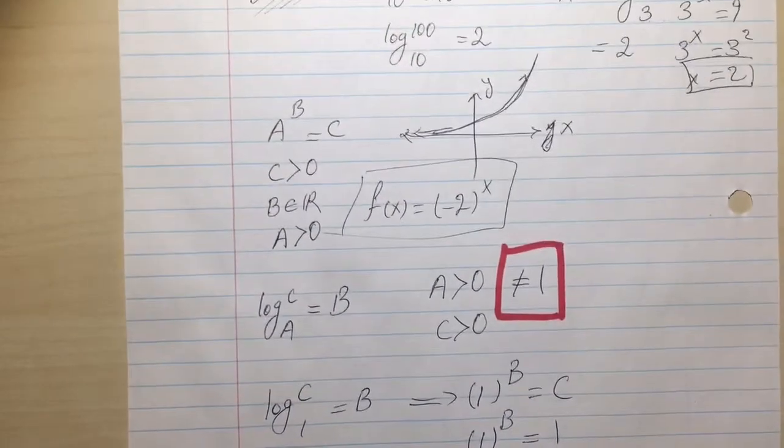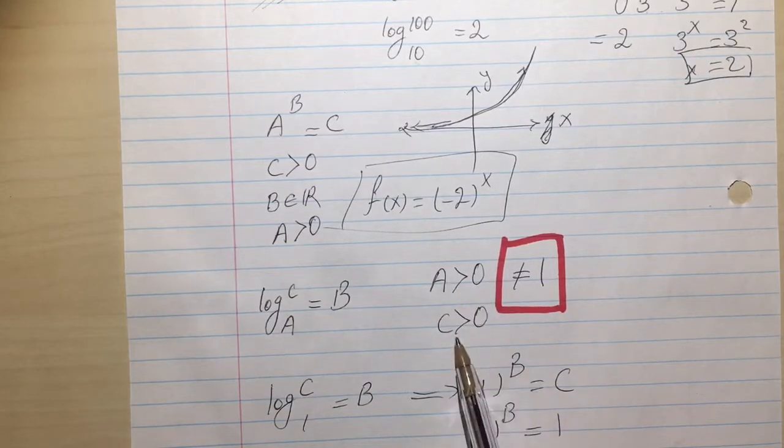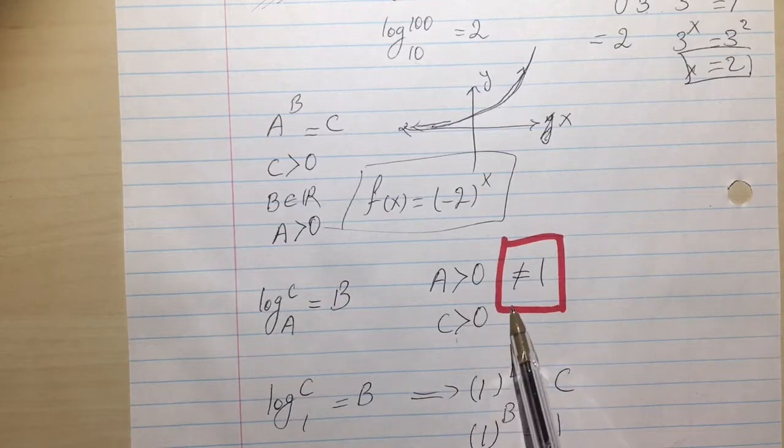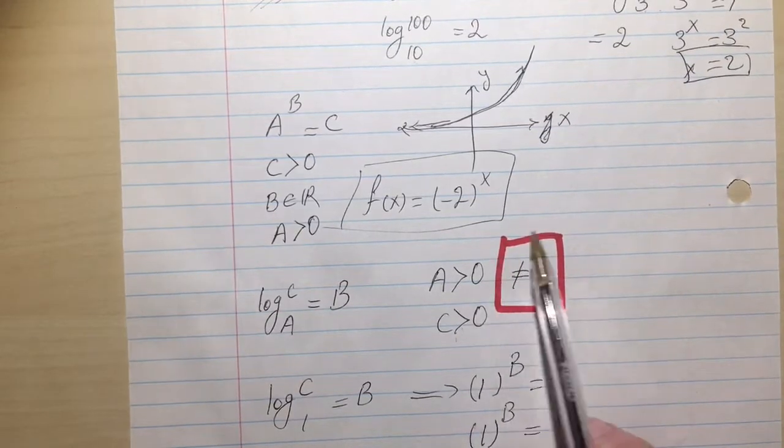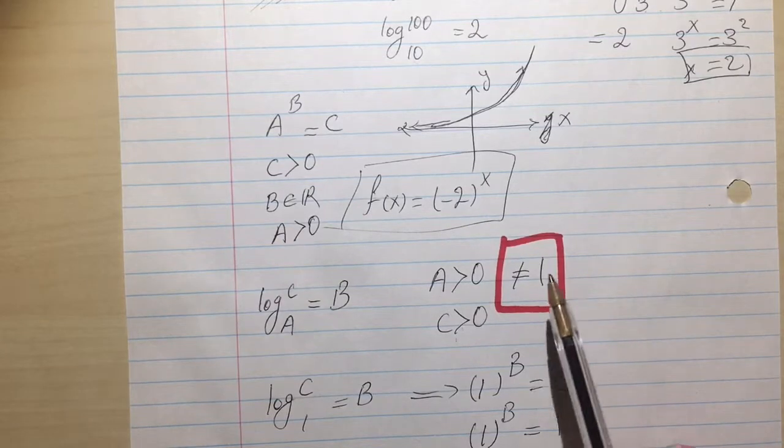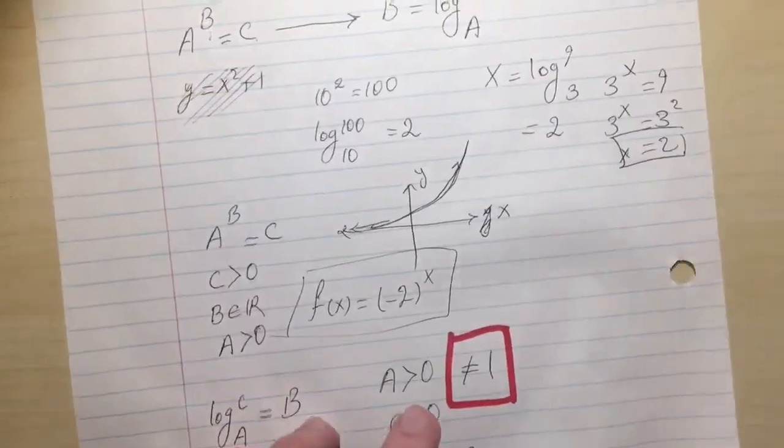So the restrictions would be A is greater than zero, C, the argument, is greater than zero, and also a new thing which is not in the exponential functions, A cannot be 1. So let's move on to this.